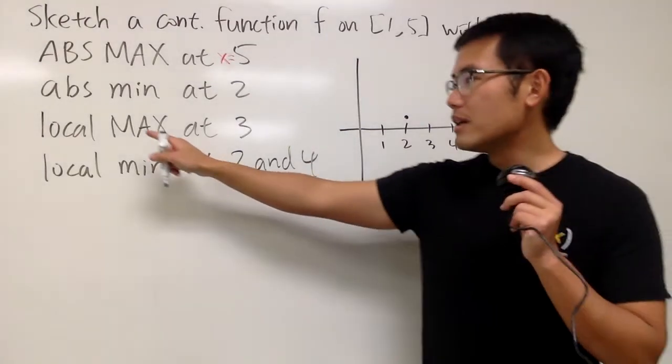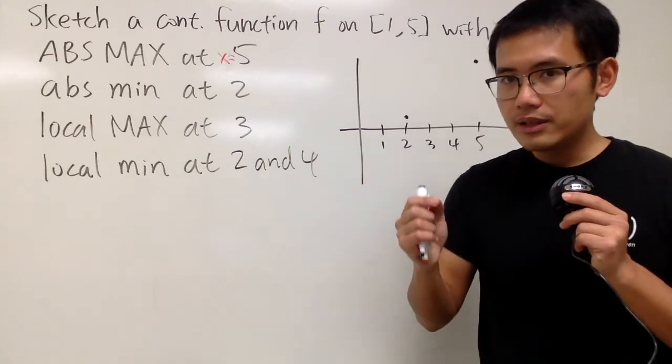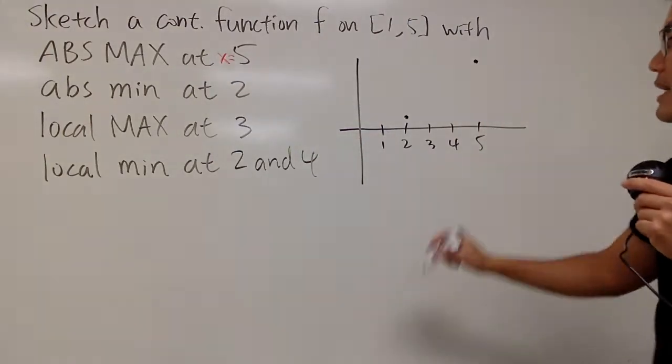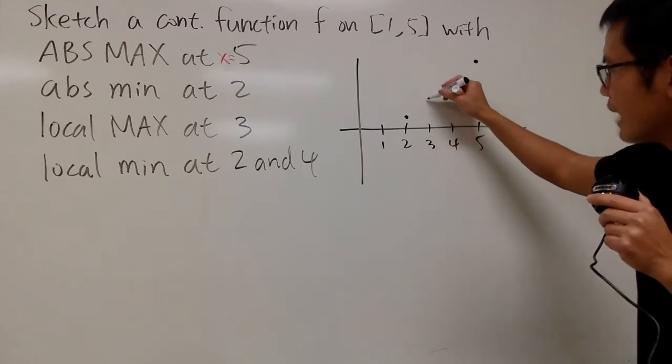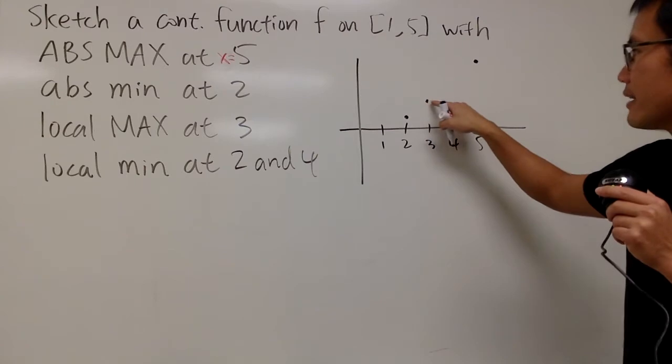Next, we need to have a local maximum at 3. And remember, the local max looks like this, right? Or maybe like this, if you would like. But anyway, local max at 3, so I will have to have a slightly higher y value than that. And I just have to make sure it goes up and then come back down.